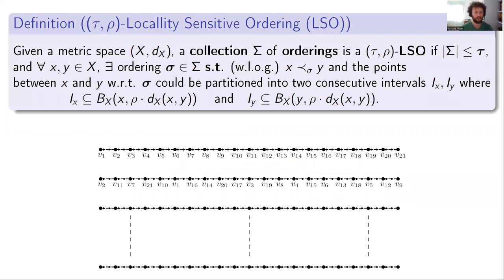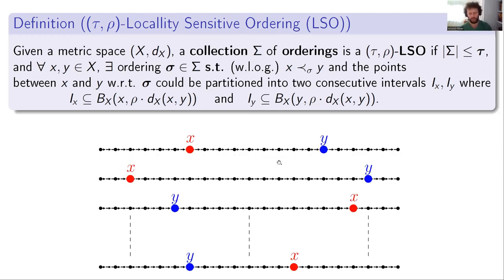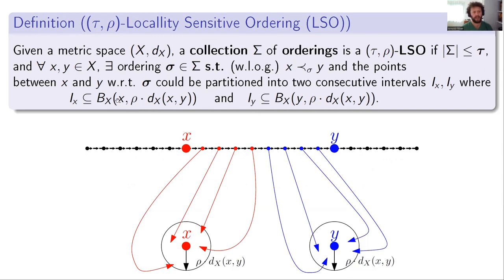Let's dive into the definition. Given a metric space X, a collection sigma of orderings is a tau-rho LSO (an abbreviation for locality-sensitive orderings) if the number of orderings is at most tau, and for every pair of points X and Y, there is a special ordering sigma such that, without loss of generality, X comes before Y, and the points between X and Y in the ordering can be partitioned into a prefix and a suffix, such that all points in the prefix are in a very small ball around X and all points in the suffix are in a very small ball around Y.